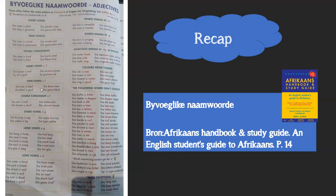Now here is a part where you have to concentrate with these three. The first one: if I've got a short vowel followed by an f, that f is not happy — he wants an extreme makeover. He becomes a double w. So a short vowel followed by an f means the f becomes two w's followed by an e.